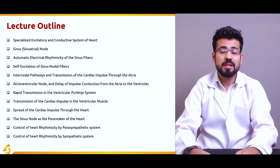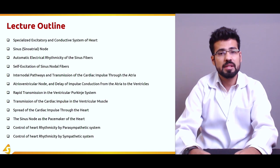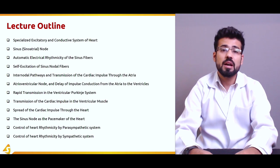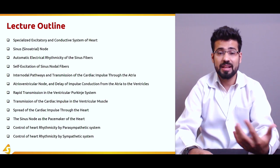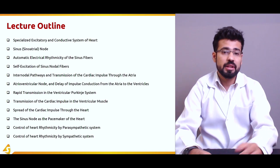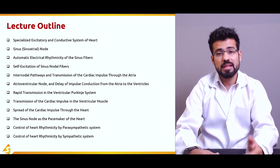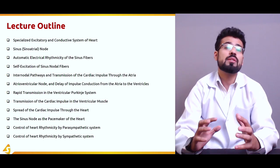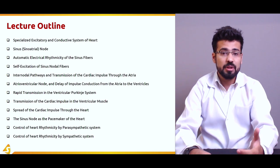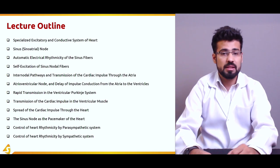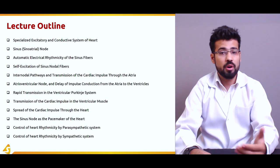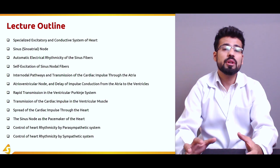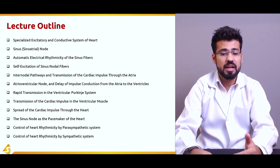We are going to discuss the rapid transmission of impulses in the ventricular system, including the Purkinje fibers, and how these impulses spread throughout the ventricle. After that, we'll discuss the sinus node as the pacemaker of the heart, and the reasons why the sinoatrial node — and not the AV bundle, AV node, or Purkinje fibers — serves as the pacemaker. We'll also discuss the control of heart rate by the parasympathetic and sympathetic systems.